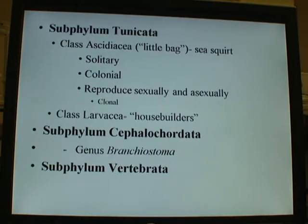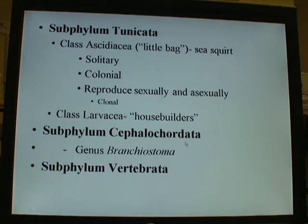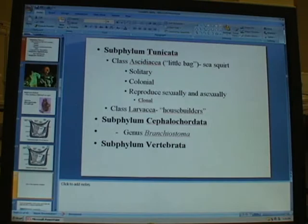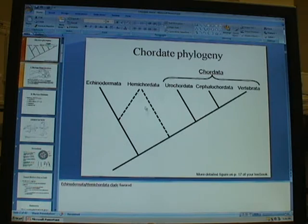The three major groups of chordates that you'll see in this lab are tunicates, cephalochordates, and vertebrates. If you go back to that first tree you saw, these are the three groups.